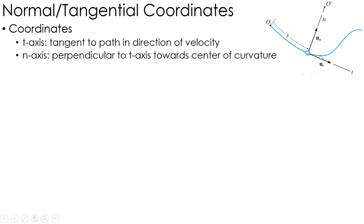So in this plot here, curving like this, n points towards the center of that curvature, towards the center of what would be a circle. t is tangent, n is normal to the tangent.